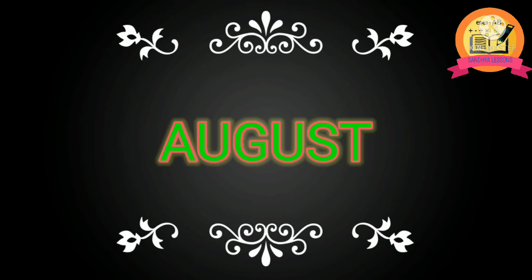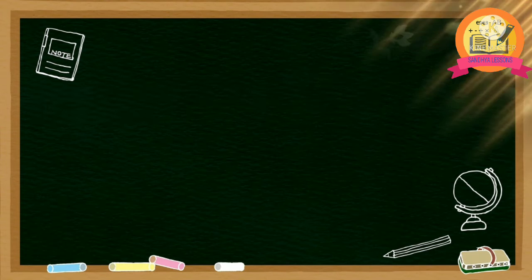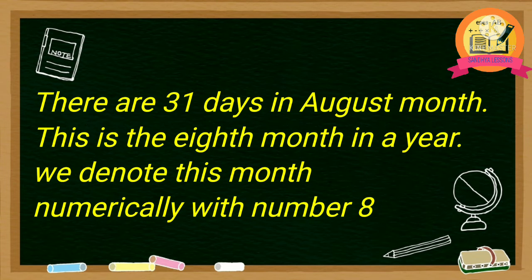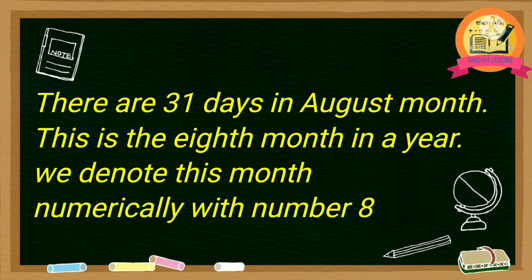August — A-U-G-U-S-T. There are 31 days in August month. This is the eighth month in a year. We denote this month numerically with number 8.